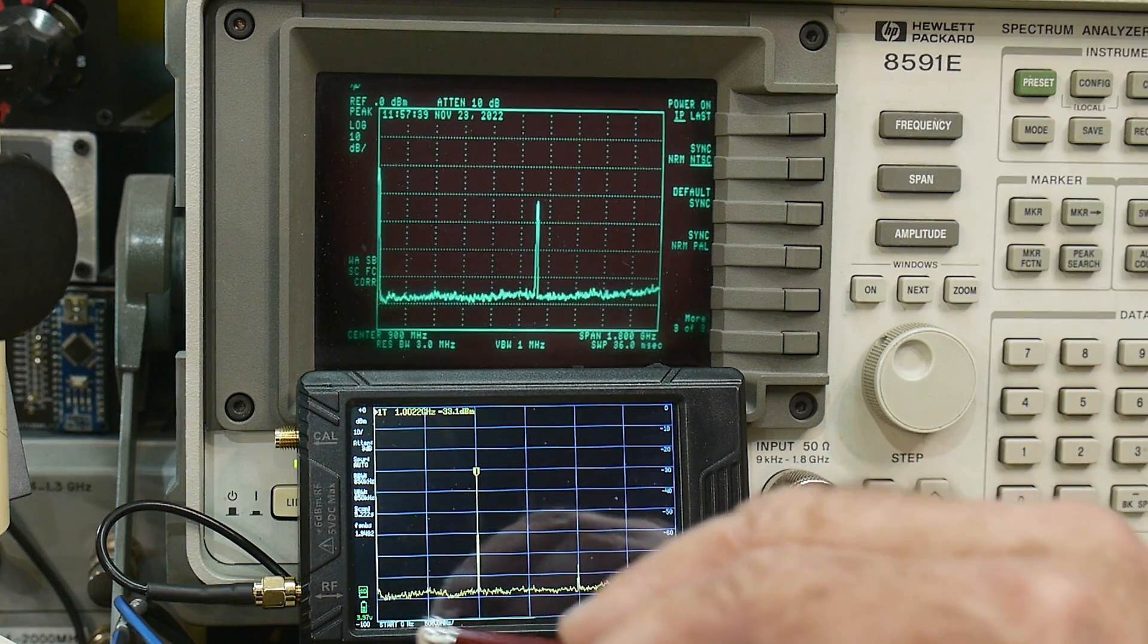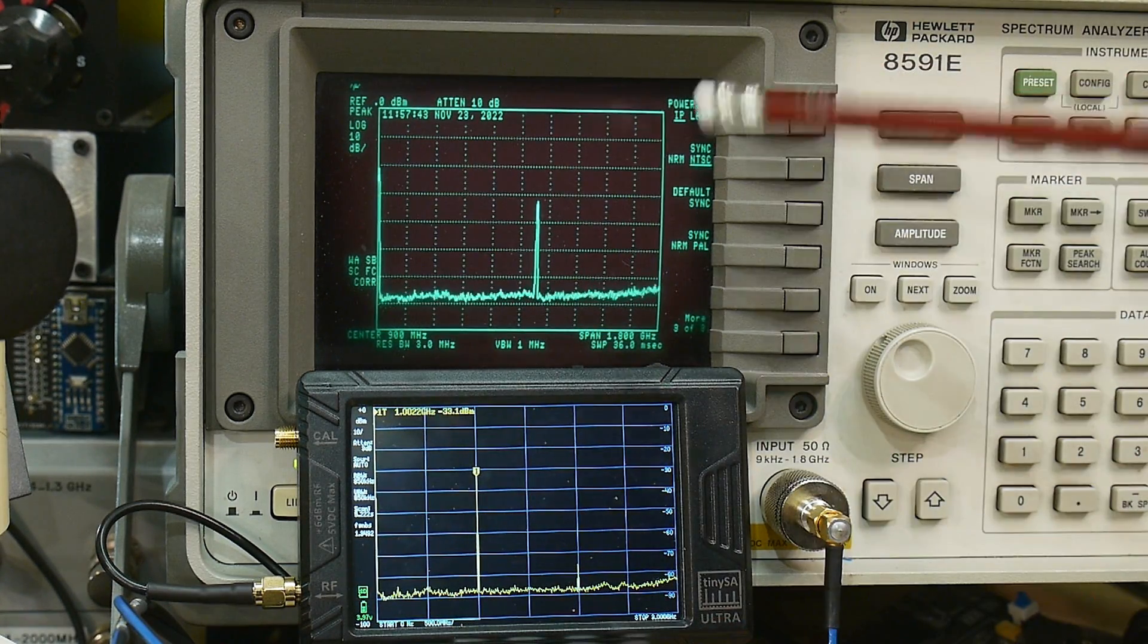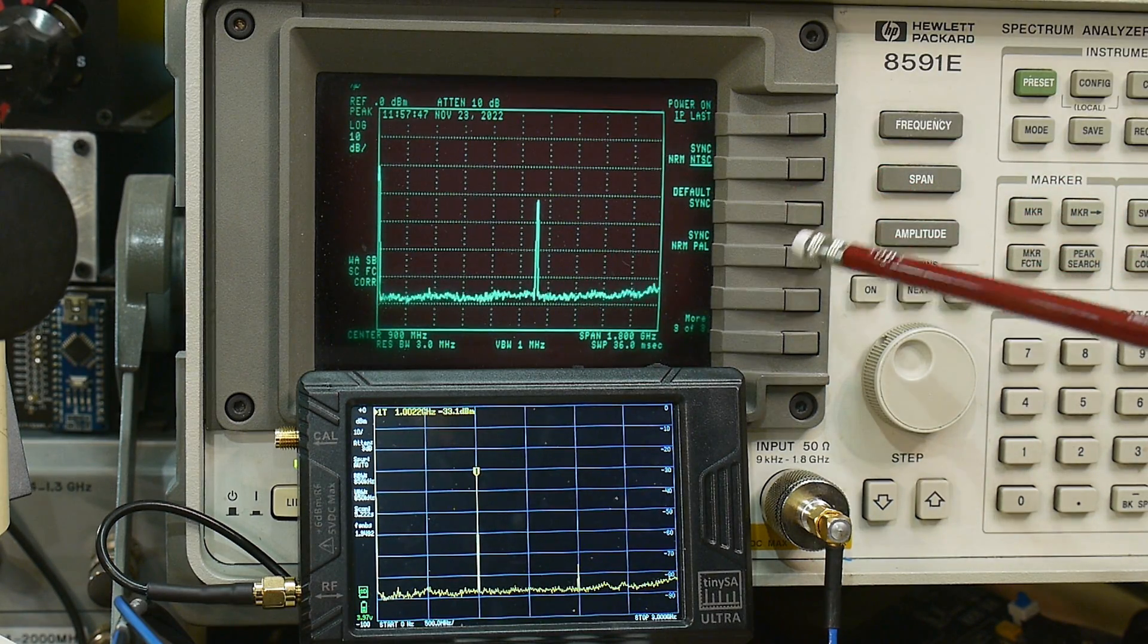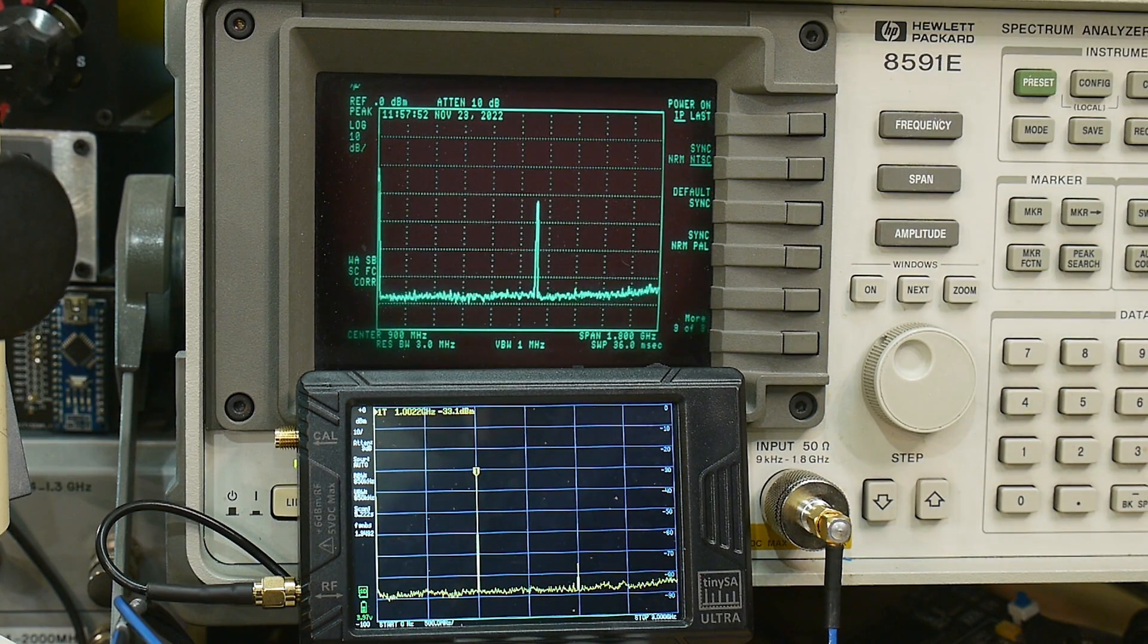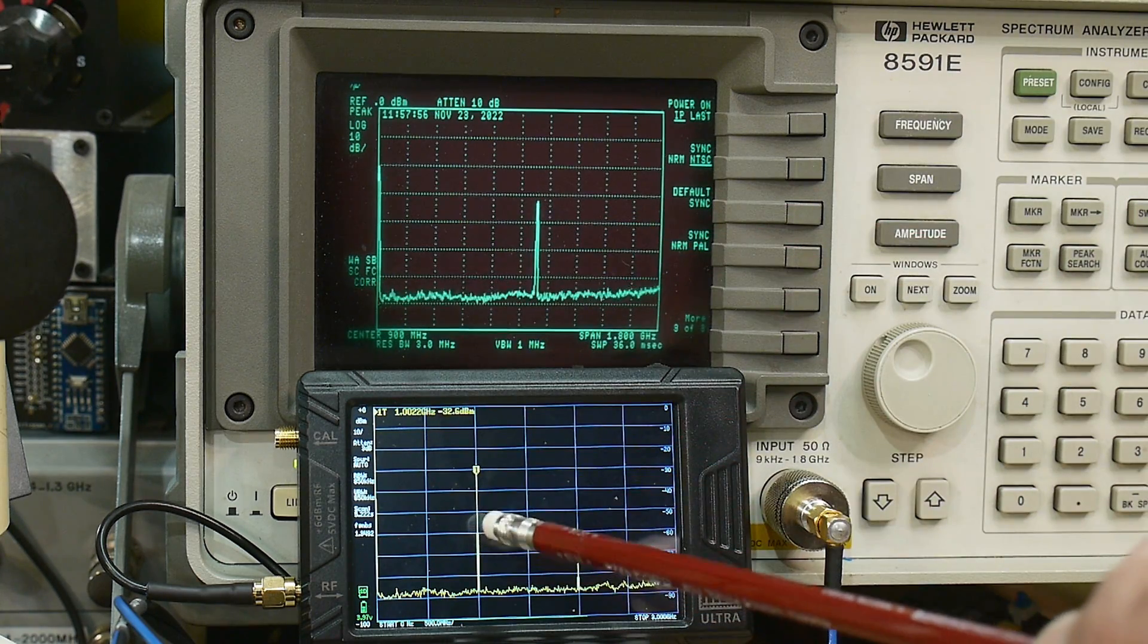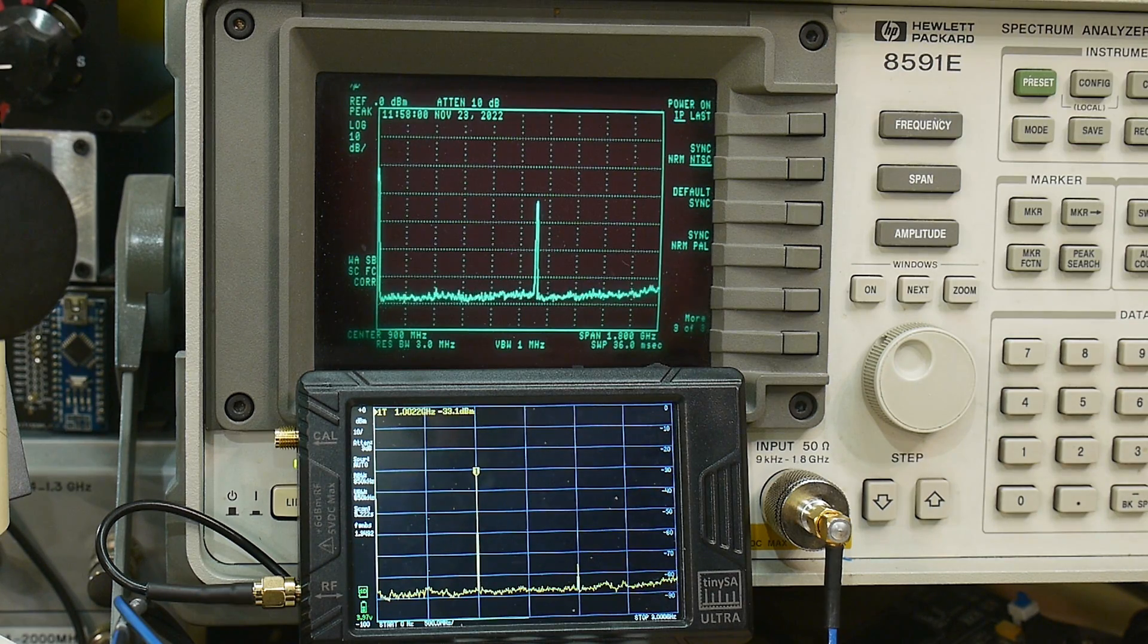When I enabled Ultra mode, it immediately went to a 3 gigahertz full span. Now, this Spectrum Analyzer only goes to 1.8 gigahertz full span. So, I've put in a 1 gigahertz tone, and so here I have a 1 gigahertz tone, and you see here I have a 1 gigahertz tone. Now, there's a couple interesting things that's going on.